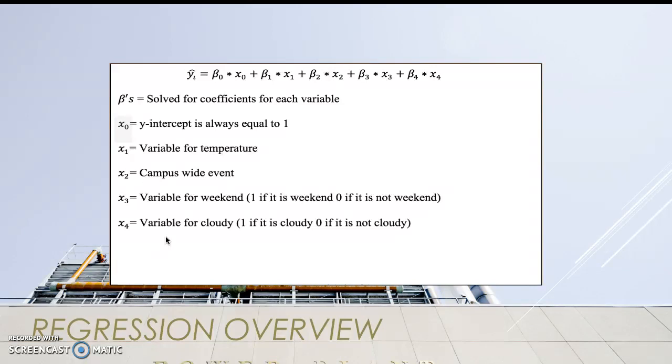x0 through x4 represented different variables. We included outside air temperature, campus-wide events, whether or not it was a weekend, and the weather.